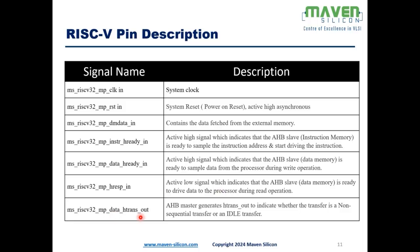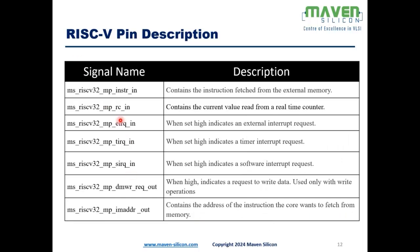DATA_HTRANS_OUT defines the type of transfer currently happening between the processor and data memory — it could be a non-sequential transfer or an idle transfer. INSTRUCTION_IN is the 32-bit instruction bus containing instructions fetched from external memory. MTIME_IN is a 64-bit input containing the current value read from the real-time counter. The interrupt inputs are: external interrupt, timer interrupt, and software interrupt request.